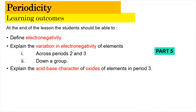So in this video, we're going to learn how to define electronegativity. Next, we're going to explain the variation in electronegativity of elements across period 2 and 3 as well as down the group. Next, we're going to explain the acid-base character of oxides of elements in period 3. So these learning outcomes will be covered in part 5, which is this video. So without any further ado, let us start.